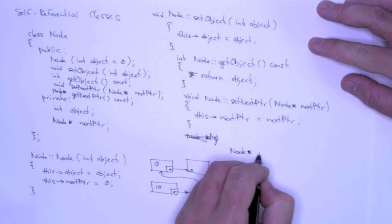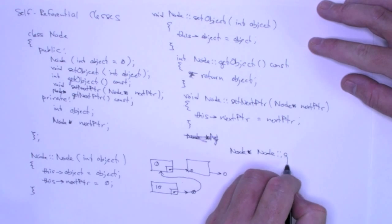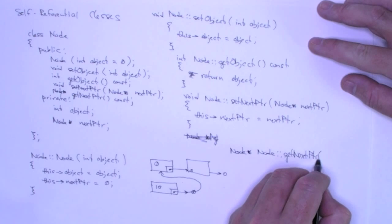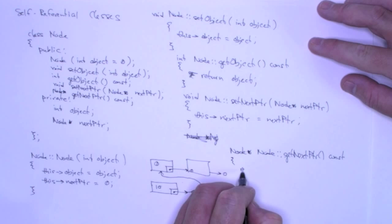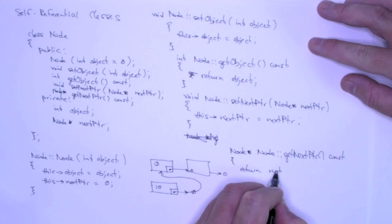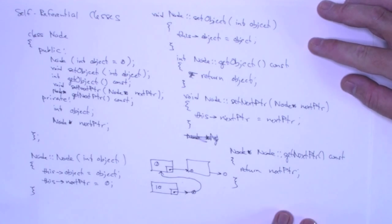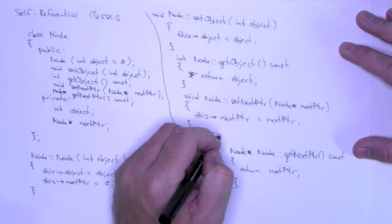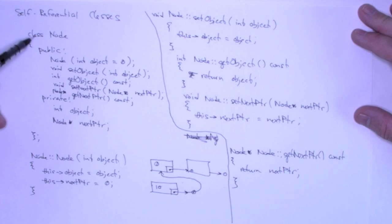We want this to return a pointer — it's a method of the node class called get next pointer, and it's constant. All we're going to do here is return next pointer. So here is the implementation of the node class.